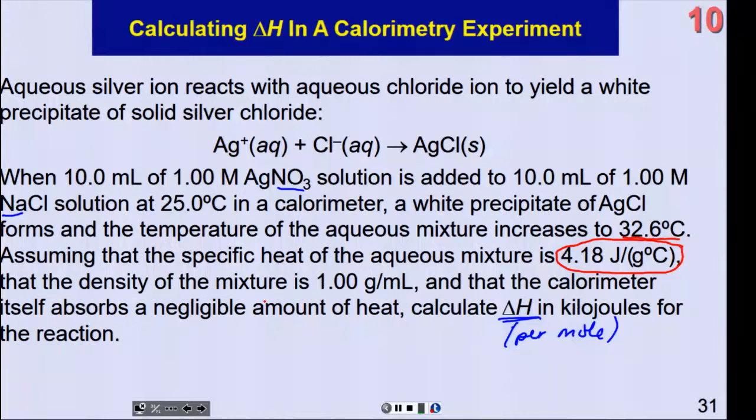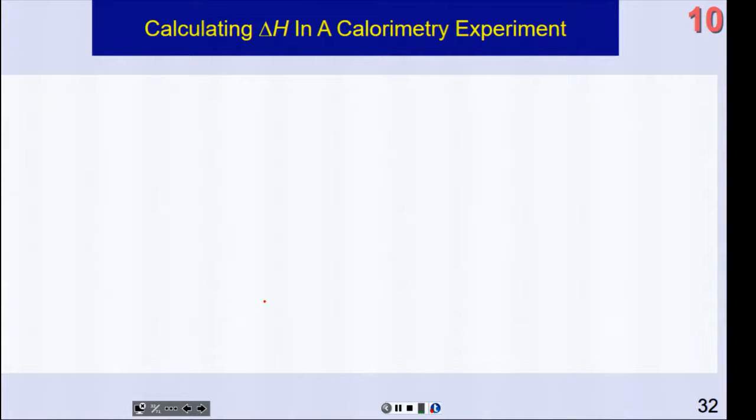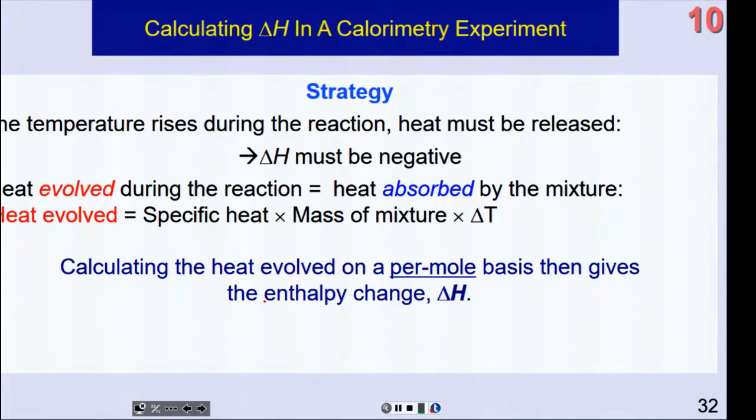We're going to come up with delta H in kilojoules for the reaction. In other words, we'll calculate Q. Delta H is going to be the heat change divided by the number of moles. So it's heat, kilojoules per mole kind of thing at the end. Alright, so what will we do? Here's our strategy. The temperature rises during the reaction. The heat is therefore released, and the delta H is going to be negative. Heat is being released.